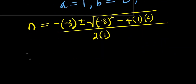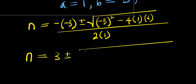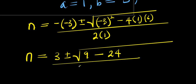From here, n = (3 ± √(9 - 4·1·6)) / 2 = (3 ± √(9 - 24)) / 2.